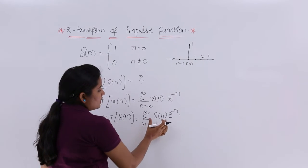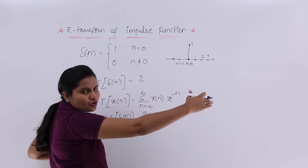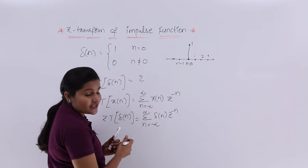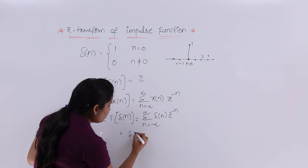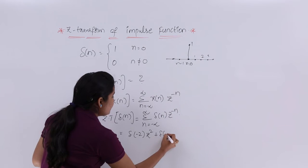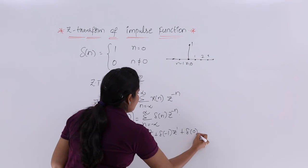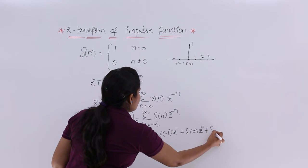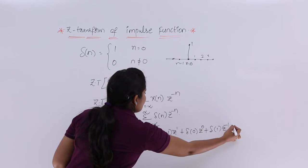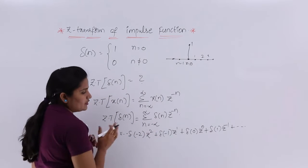Expanding this summation, we get many terms: δ(-2)·z² + δ(-1)·z¹ + δ(0)·z⁰ + δ(1)·z^(-1) + and so on in both directions.